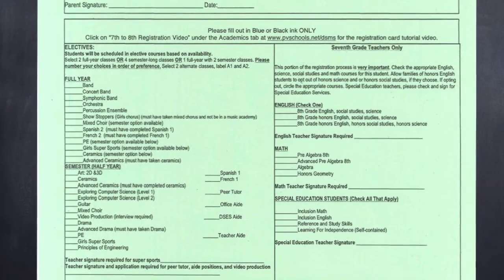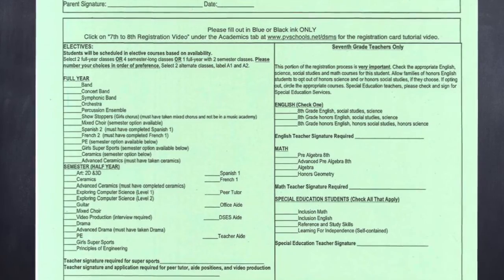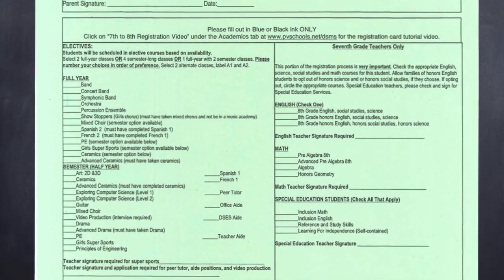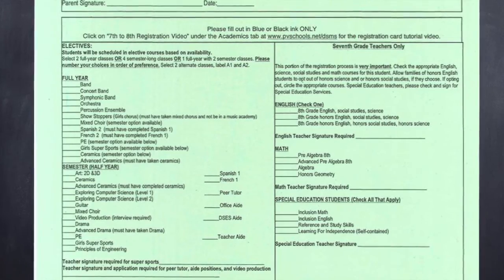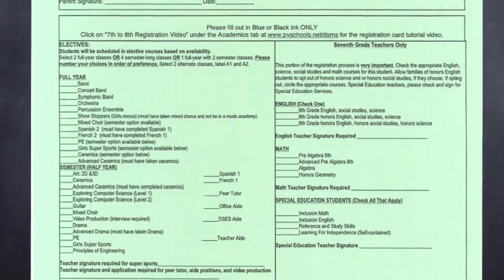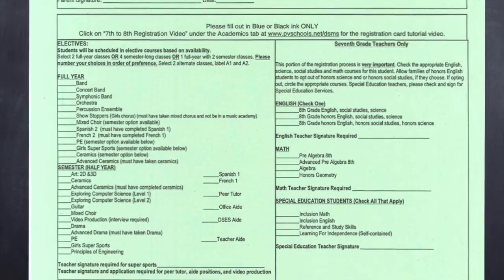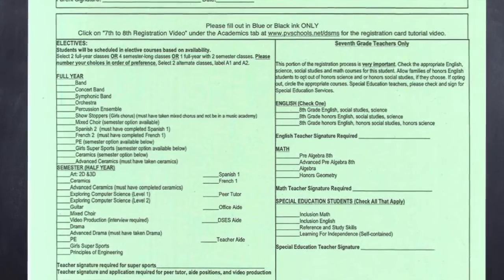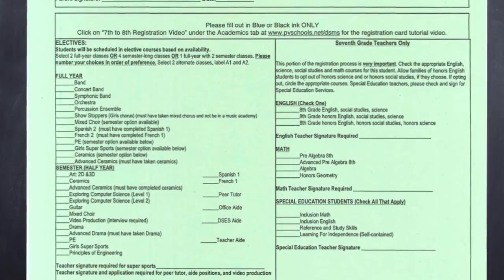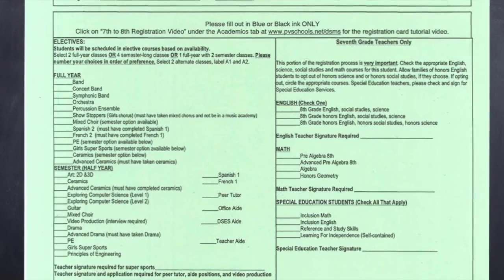Let's take a moment to look at the last few lines on the card where it says teacher signatures required. For Super Sports, you will need to see Mrs. Gore for a signature. For Peer Tutoring, you will need to see Mrs. Coulter for a signature.